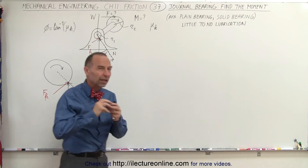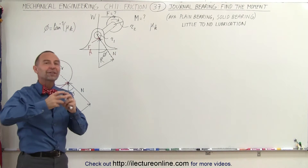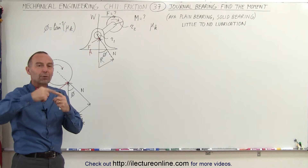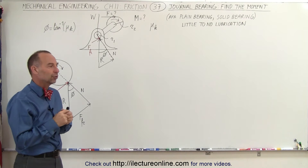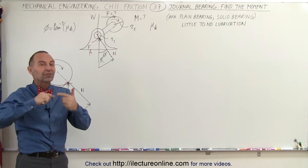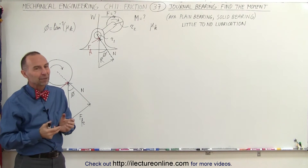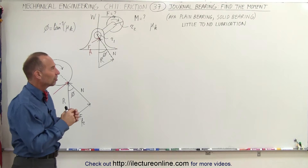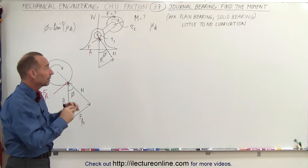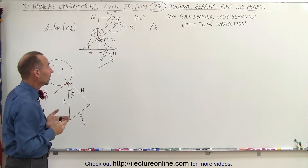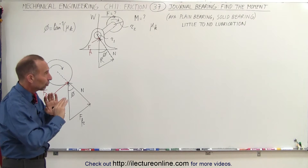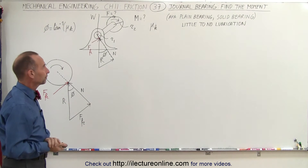If we add a lot of lubrication, there are different kinds of dynamics — we would have to take fluid flow into account, and the rotation speed would also affect the friction between the solid bearing and the housing. So in this case, with little to no lubrication, we keep it simpler.